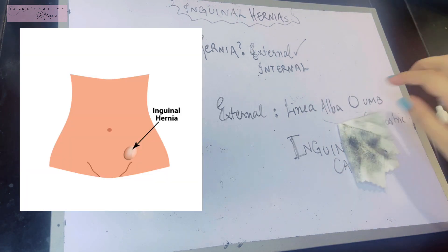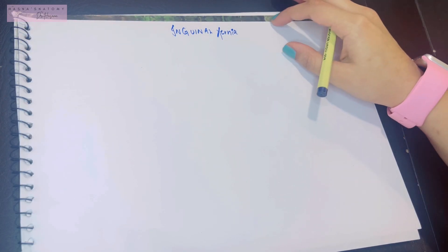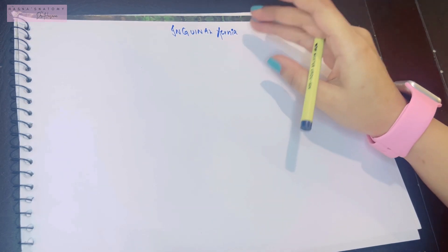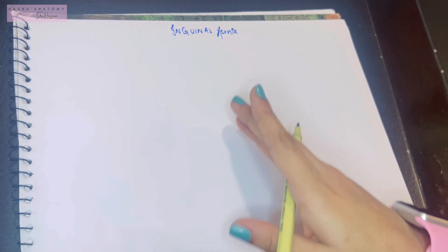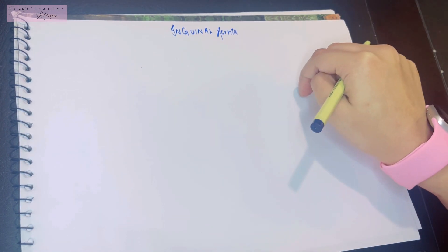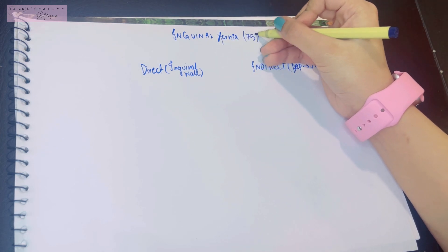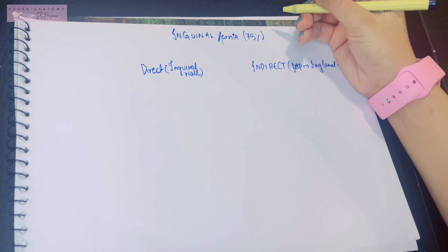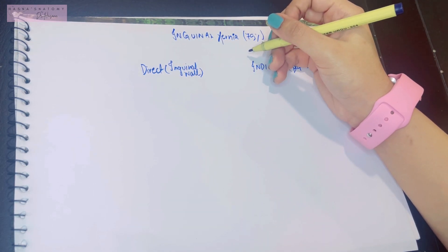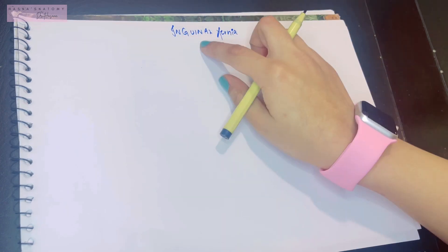By definition, an inguinal hernia is a protrusion of abdominal content — either peritoneum or a loop of intestine — through the inguinal wall or inguinal canal. Inguinal hernias constitute about 75% of all hernias, and are more common in men — approximately 86% of cases occur in males.